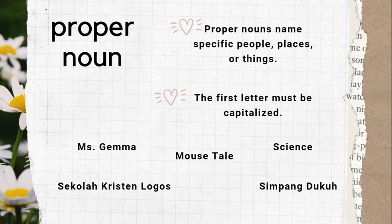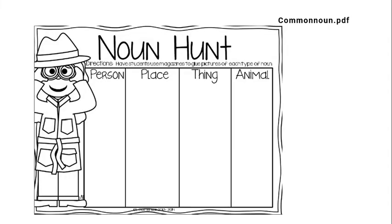To help you understand common nouns more, I have attached an activity — not a task, but something to help you learn. I will also attach a song about nouns. I want you to listen to that song and write down the nouns you hear: person, place, thing, and animal mentioned in the song.